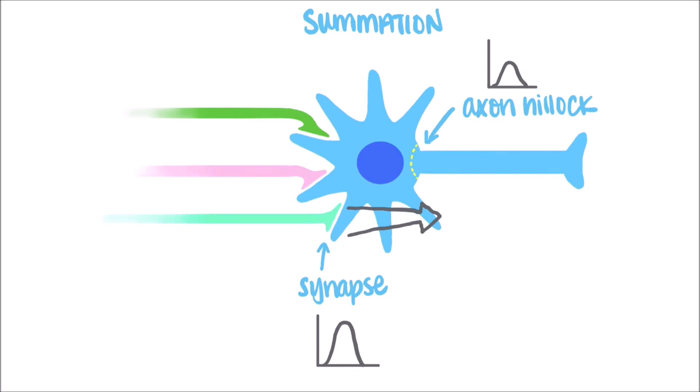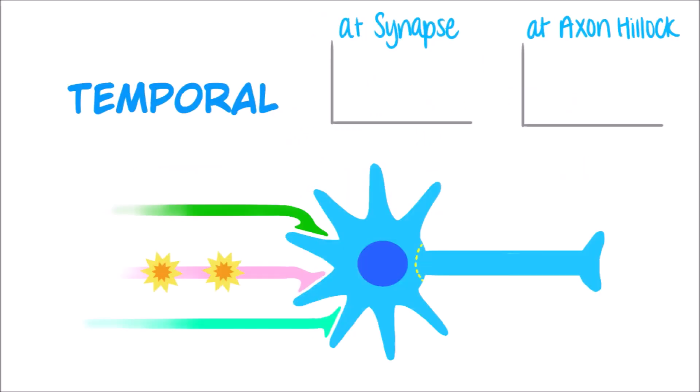Now let's look at the two types of summations with EPSPs. Temporal summation occurs when multiple action potentials travel down a presynaptic neuron one after another within a short time frame, causing them to all summate at the axon hillock of the postsynaptic neuron.